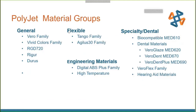PolyJet materials are all thermosets — once cured, they will not go back to liquid. They shoot out as liquid ink through the printhead. You have the Vero family in different colors: Vero white, yellow, red, blue, plus new vivid colors. The 720 is a clear material. Rigur and Durus materials are harder and more impact resistant. Agilis is the newest flexible material with great stretch. Engineering materials include Digital ABS and high-temp. Specialty materials cover hearing aids, dental, biocompatible, and Veroflex for eyeglass frames.